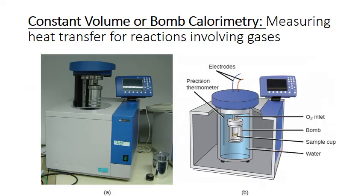In the previous example the reaction occurred in aqueous solution, but there are a variety of important reactions that can't occur directly in water — for example, combustion. Things won't burn when submerged in water. So to measure the heat energy released by these processes, we have to use a special type of calorimeter known as a bomb calorimeter. On the left is a picture of an actual bomb calorimeter, and on the right is a diagram cutaway so you can see what the interior looks like.